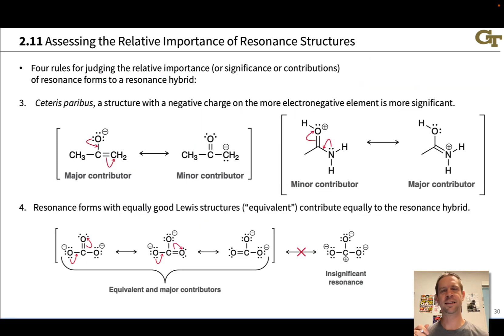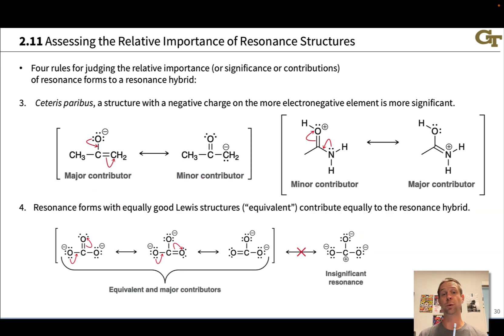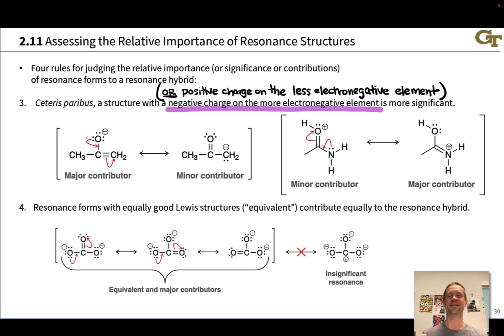Rule number three says that other things being equal, a structure with negative charge on a more electronegative element is more significant than one with negative charge on a less electronegative element. We can develop a similar rule for positive charge: putting positive charge on the less electronegative element leads to a more significant structure than one with positive charge on the more electronegative element.